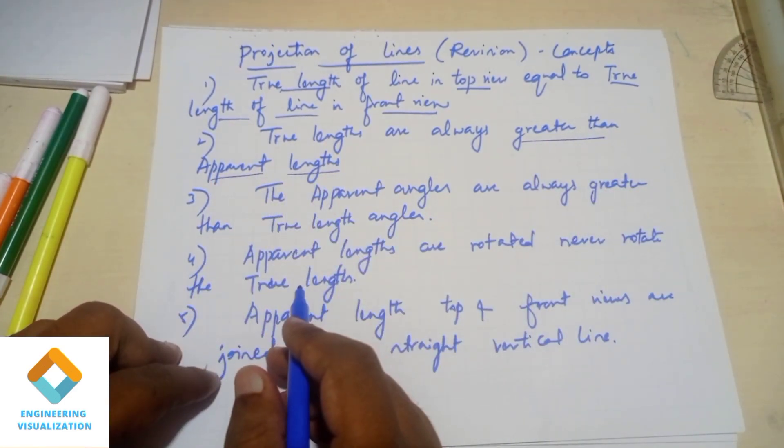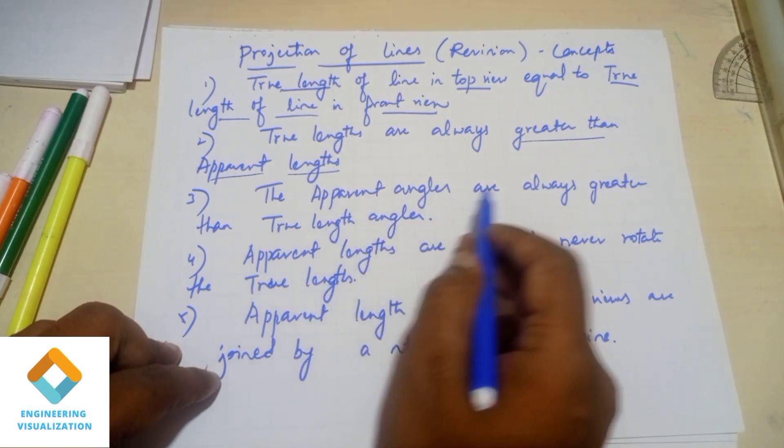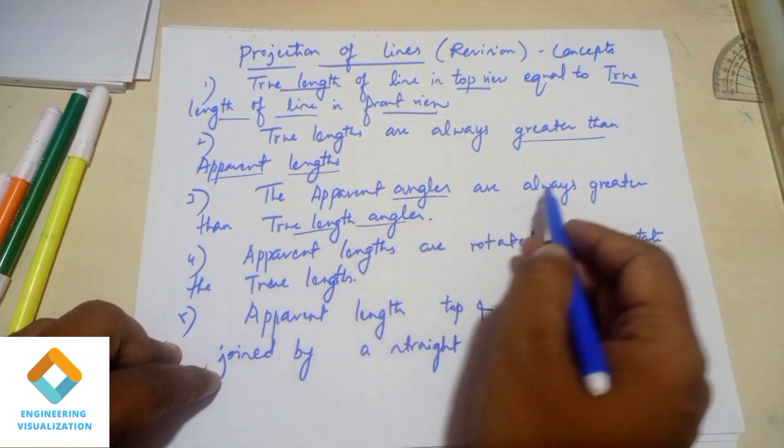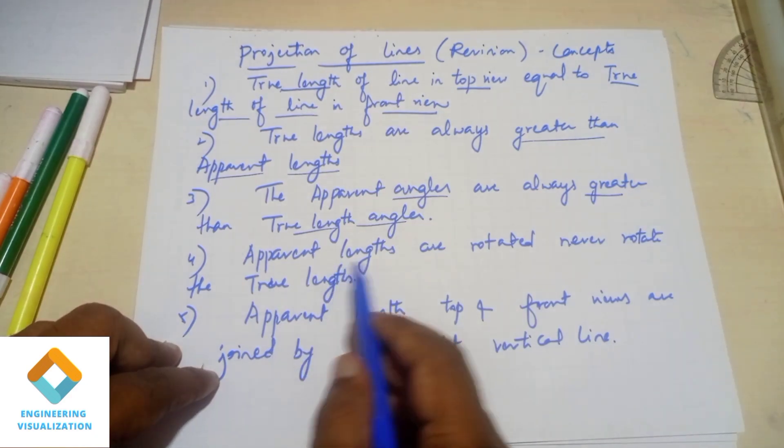true lengths are always greater than apparent lengths. True lengths are equal to true length. This is the true length. Check the apparent.